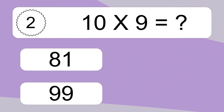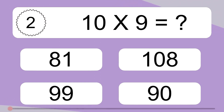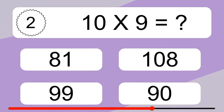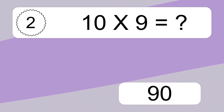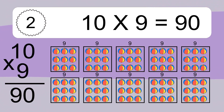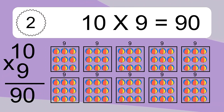10 times 9 equals what? 10 times 9 equals 90. We have 10 boxes and each box has 9 colorful balls inside. If you count all the balls in all the boxes together, you will have 10 times 9 balls. This equals 90 balls.